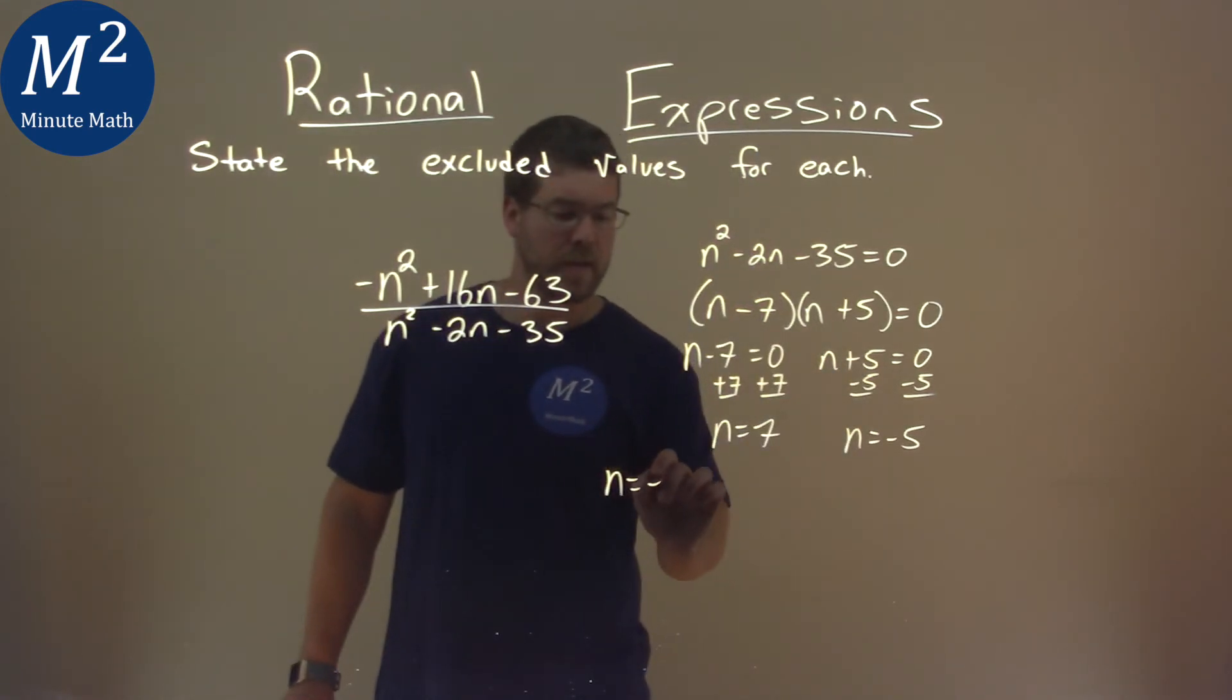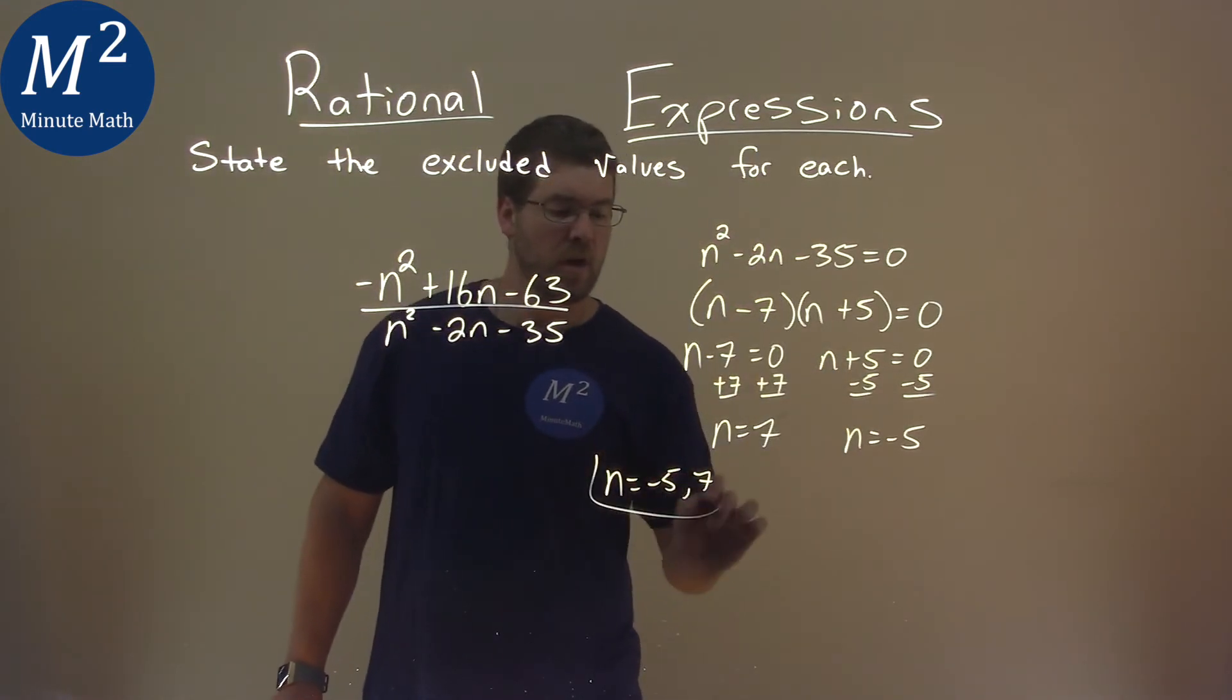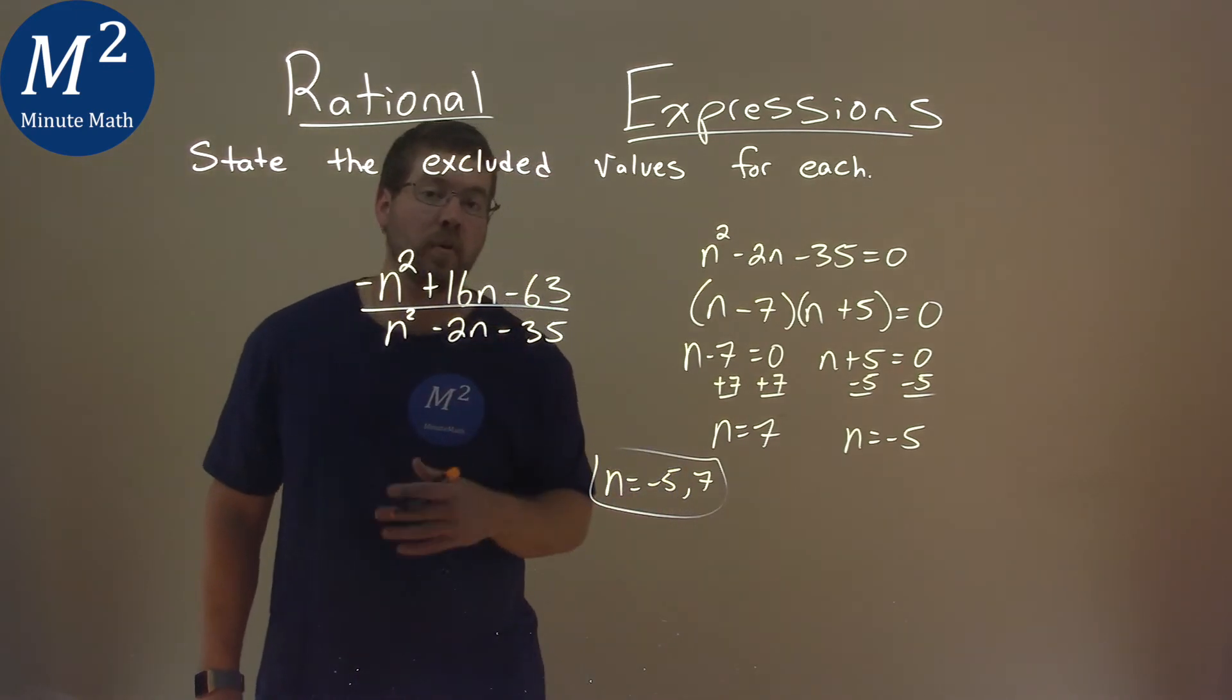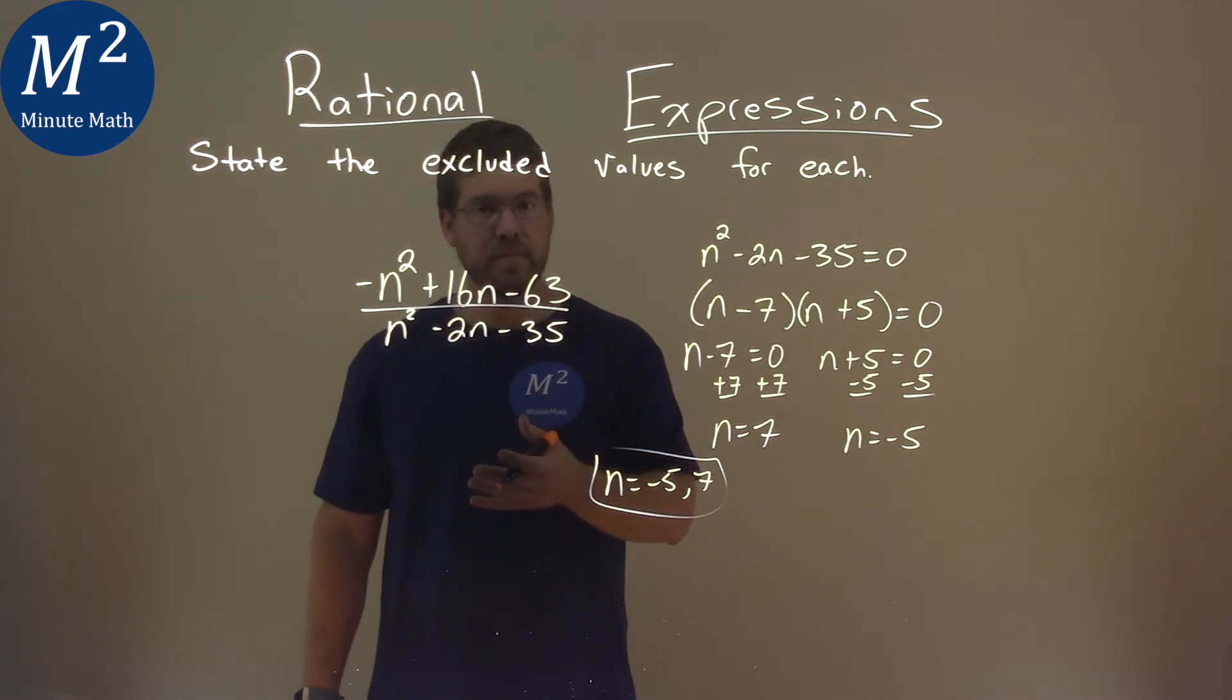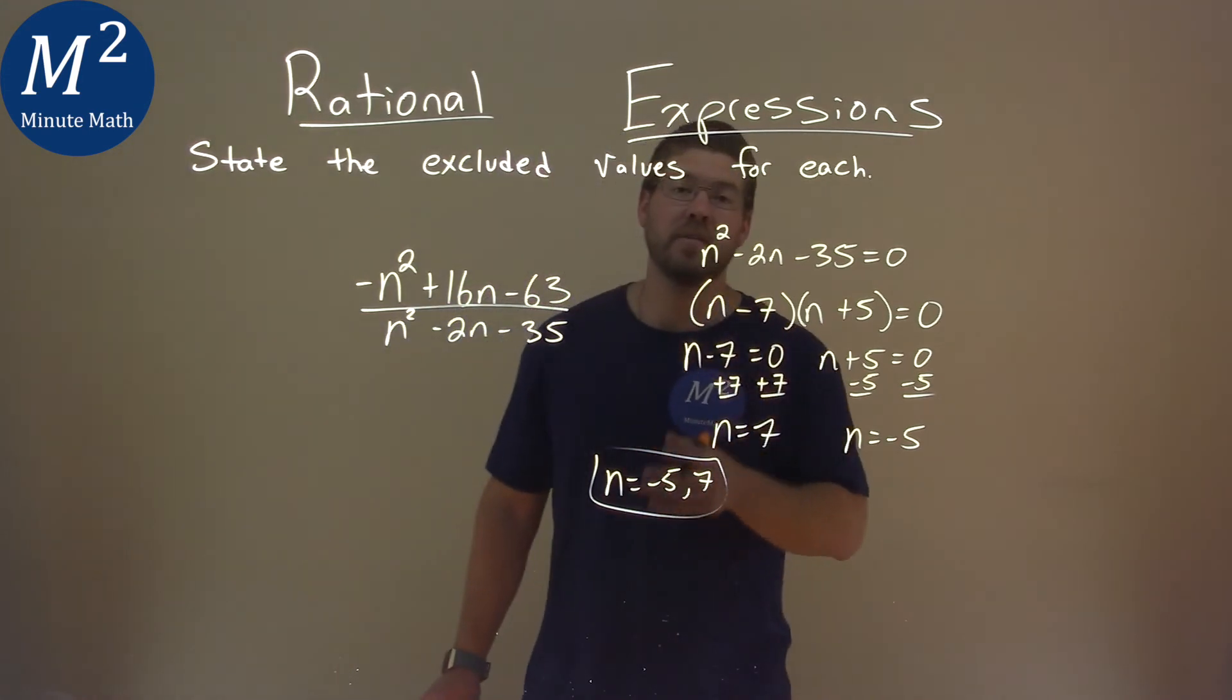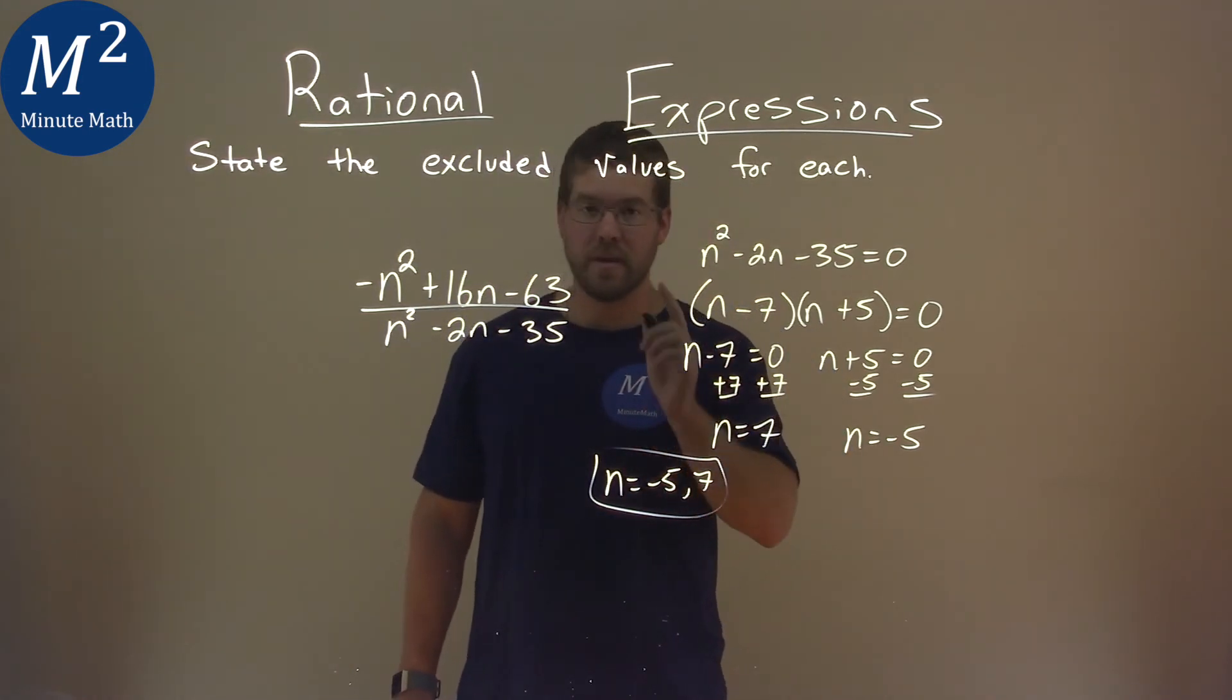So our two values here, negative 5 and positive 7, are the two values when plugged in, cause our denominator equal to 0. And so therefore, negative 5 and 7 are our excluded values.